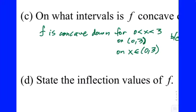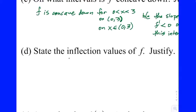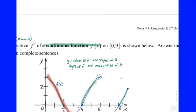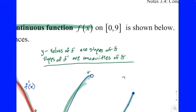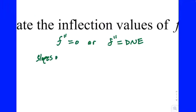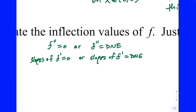State the inflection values of f. So we need to find the possible inflection values — that's going to be where f double prime equals 0 or f double prime equals DNE. If you haven't said how the graph given to you is related to f double prime, you might not get full credit. If you said way up here that the slopes of f prime are the concavities of f, that's enough. Or you could say you want to know where the slopes of f prime equal zero or where the slopes of f prime equal DNE. You want to make sure you're connecting what's given to what you're actually looking at.